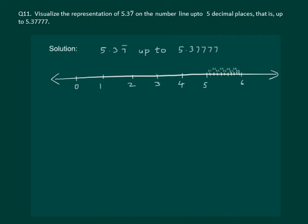Then our first division represents 5.1, next 5.2, next is 5.3. And 5.37 bar should lie between 5.3 and 5.4.